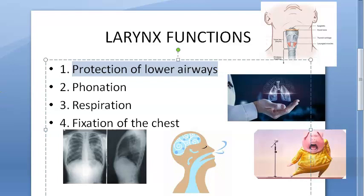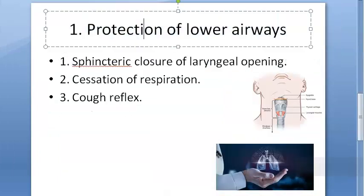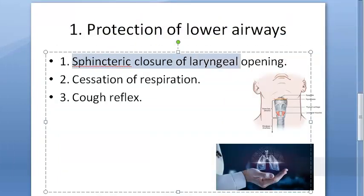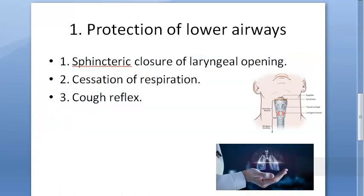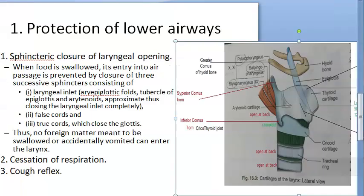Phylogenetically, protection of the lower airway is the earliest function to develop, making it the most important one. How does it protect the lower airways? Through three mechanisms: sphincter closure of the laryngeal opening, cessation of respiration, and the cough reflex. Cessation of respiration means breathing is temporarily stopped. The sphincter closure closes the laryngeal opening. The cough reflex expels any foreign body that enters.